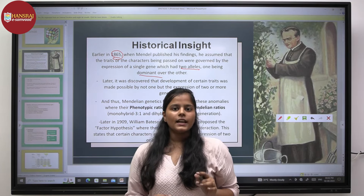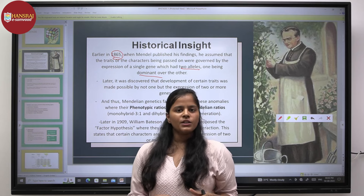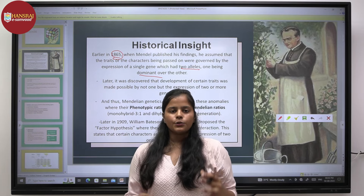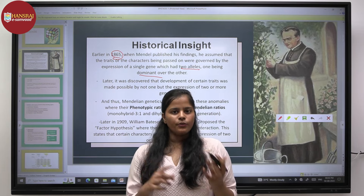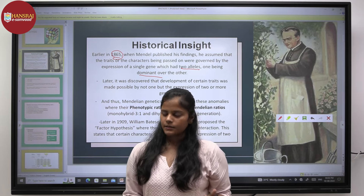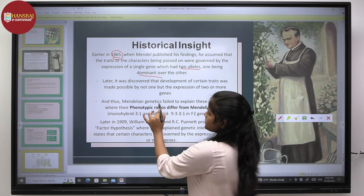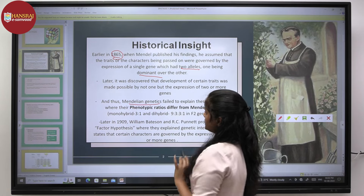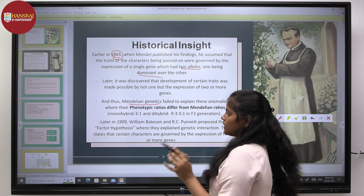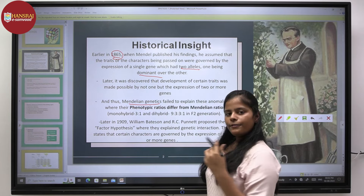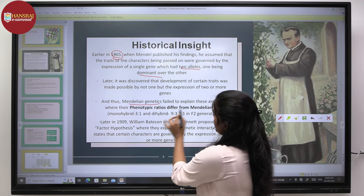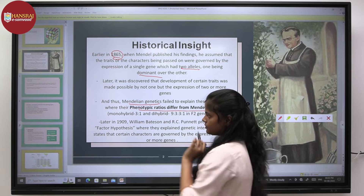Later it was discovered that the development of certain characters was controlled by not just one but more than one gene. This could not be explained by Mendelian genetics, and due to this, several different phenotypic ratios arose which differed from the Mendelian ratios.